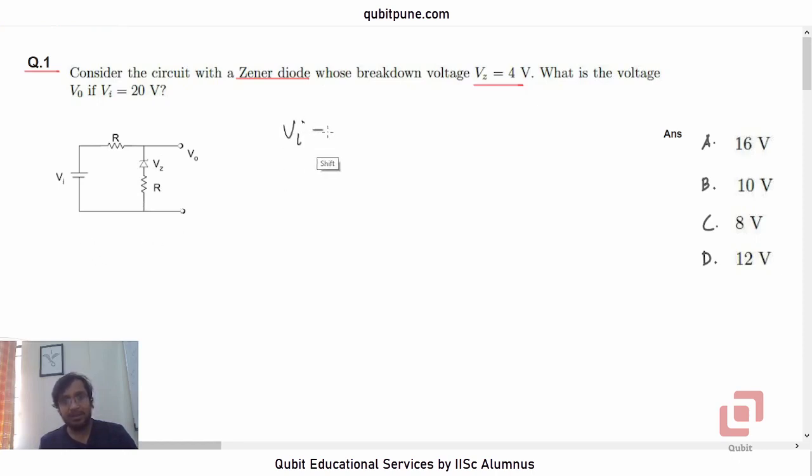Vi is 20V. The breakdown voltage of the zener diode is given as 4V. And we have to calculate V0.